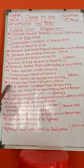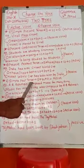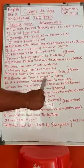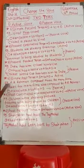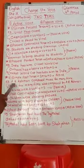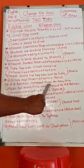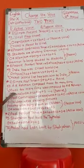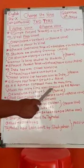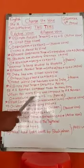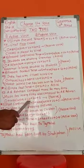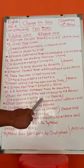Let's see the fourth tense: simple past tense. Active voice pattern: subject plus V2 (past form of the verb) plus object. For example: 'A.R. Rahman composed music for many films.' Passive voice pattern: object plus was/were plus V3 (past participle) plus by plus subject. For example: 'Music for many films was composed by A.R. Rahman.'